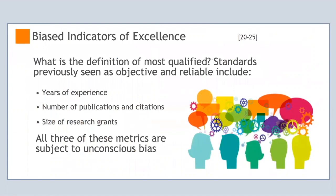The goal of granting agencies is to fund excellent research and researchers. But what if the indicators of excellence used to evaluate candidates are biased? Many reviewers may assume that they are applying an objective standard of excellence when they look at three traditional metrics: years of experience, number of publications and citations, and size of a candidate's research grants. However, it has been shown that all three of these metrics are subject to unconscious bias.